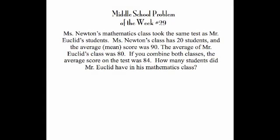In this week's problem, two math classes have taken the same test. The average for one class was 90, the average for the other class was 80, the first class had 20 students, and the average of the classes combined was 84. The one thing we don't know is how many students were in the second class, and we're going to find that out.